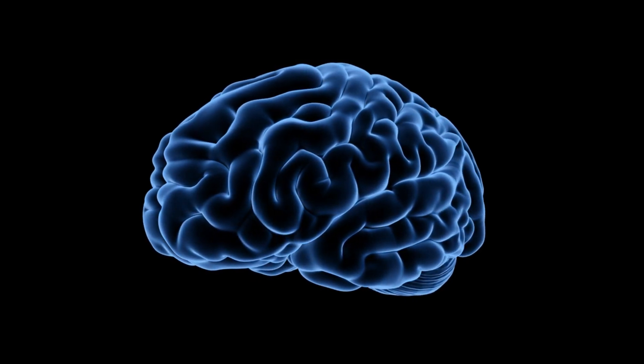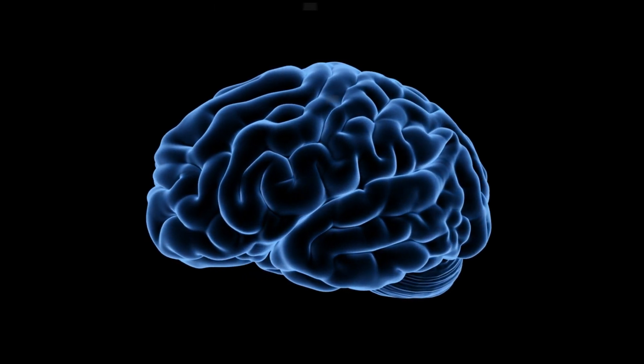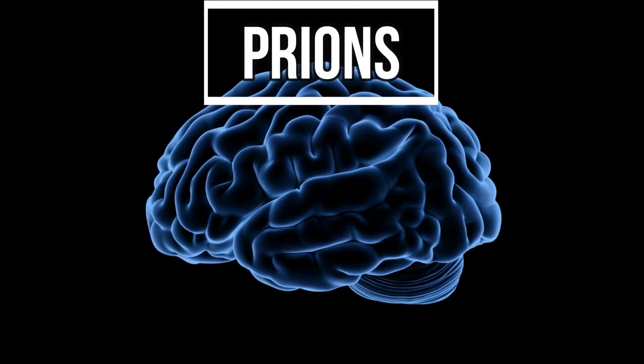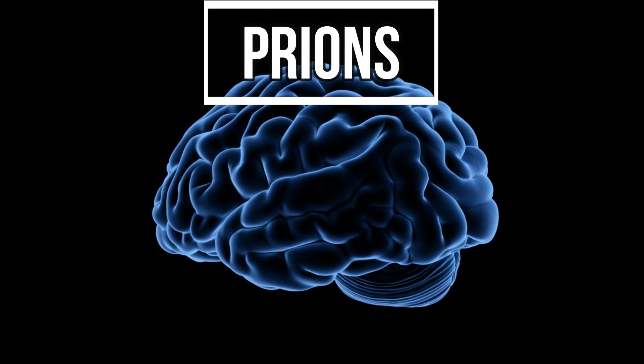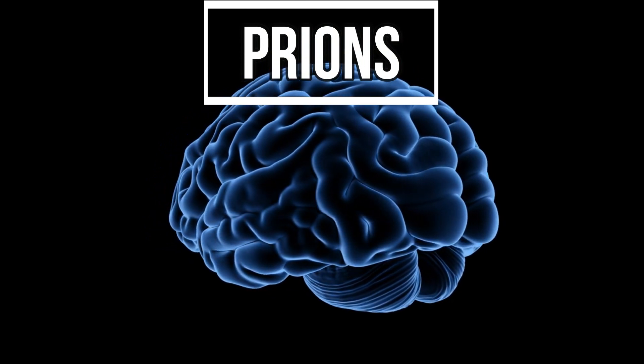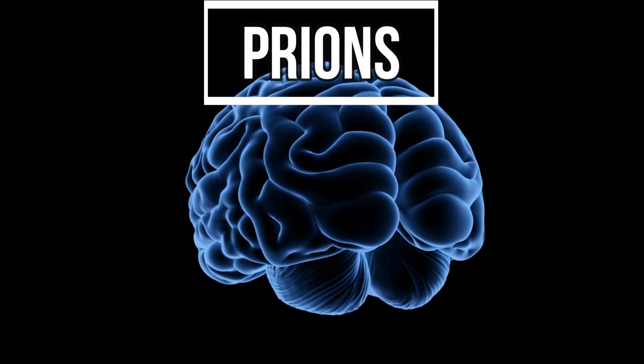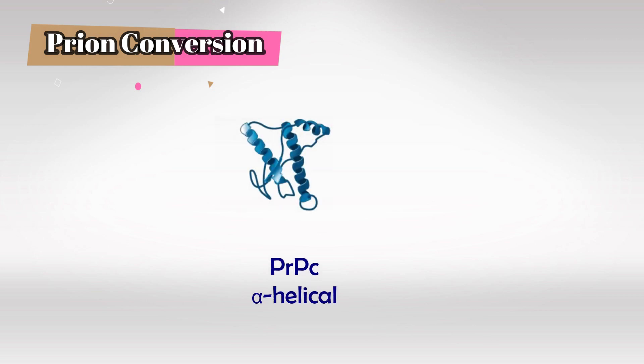Welcome back! In this video we'll talk about the pathophysiology and the important notes about prions. In our bodies we have a protein called the prion protein, which we dub PRP, and it's found throughout the body. However, prion C or PRPC is only found in the central nervous system.